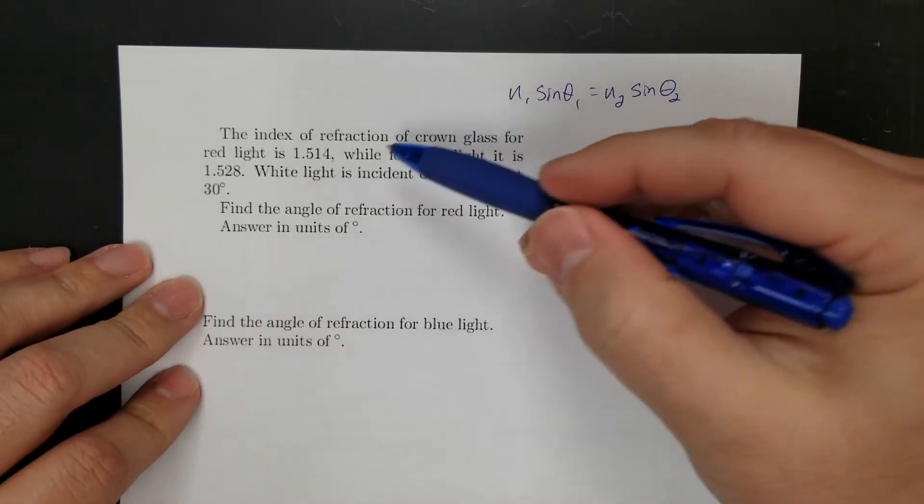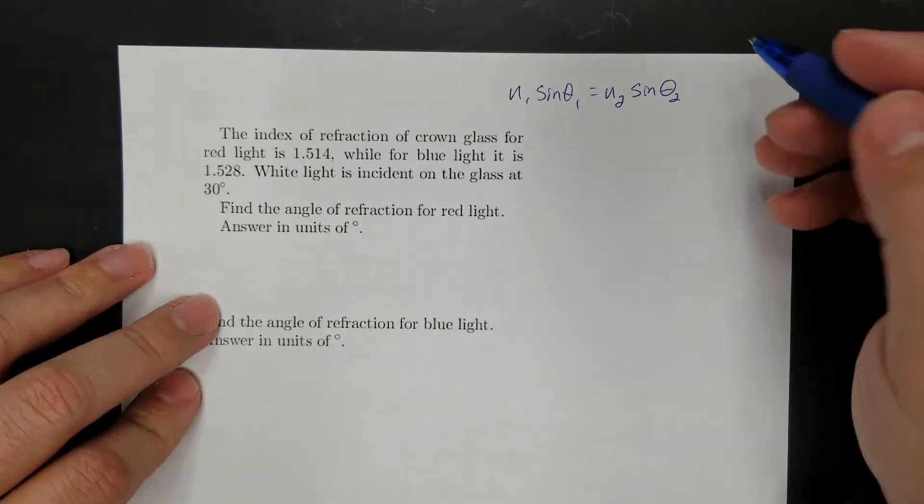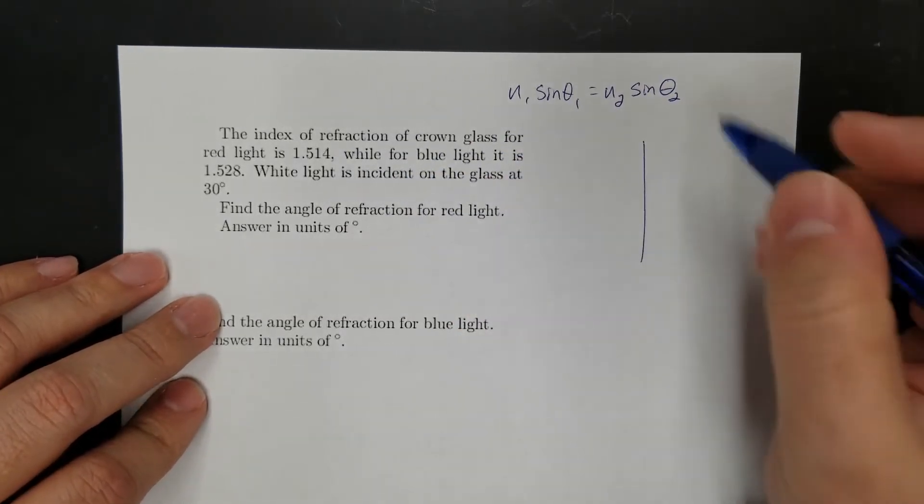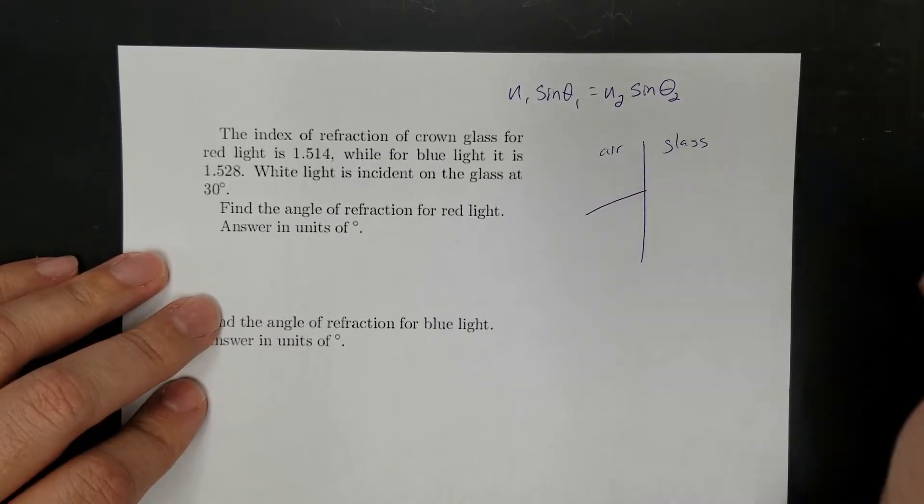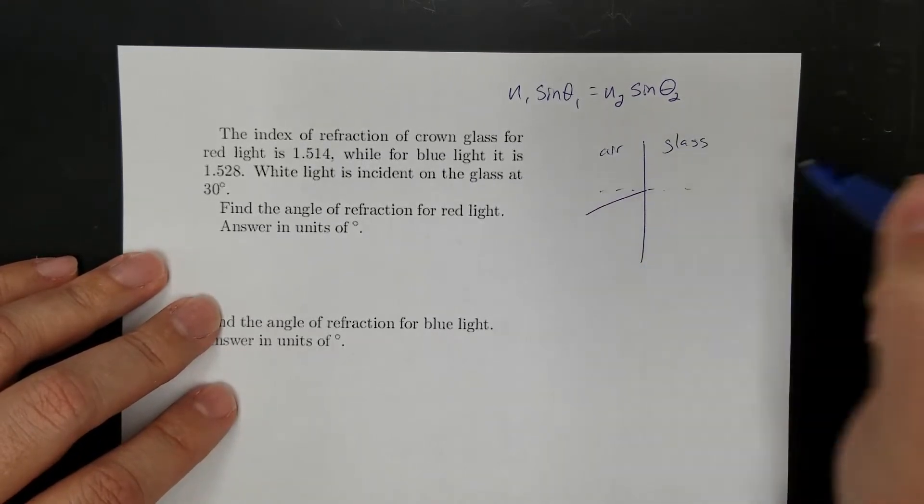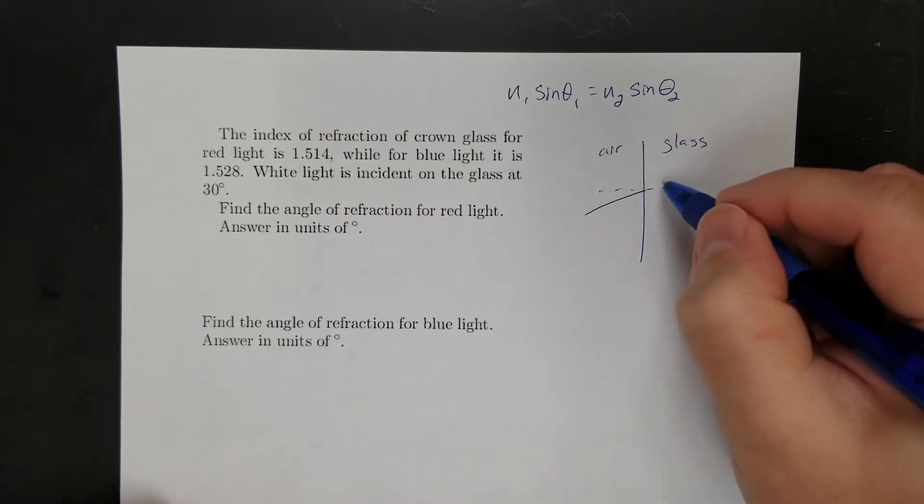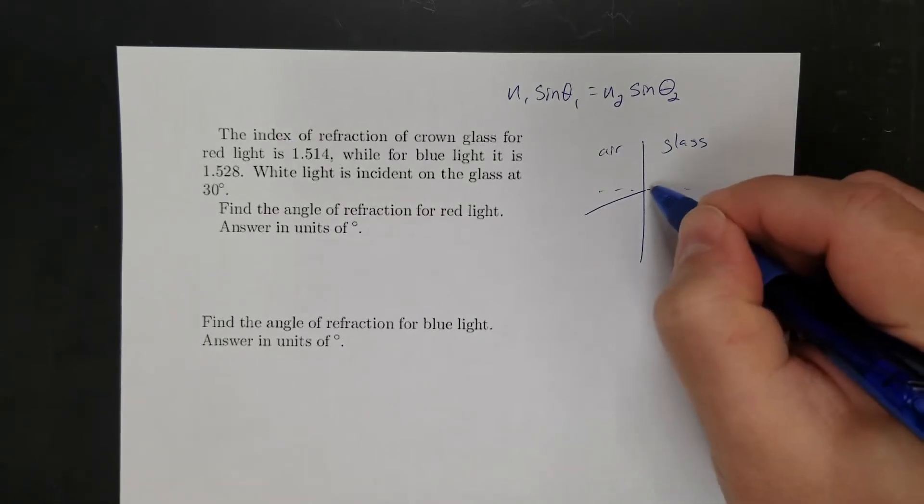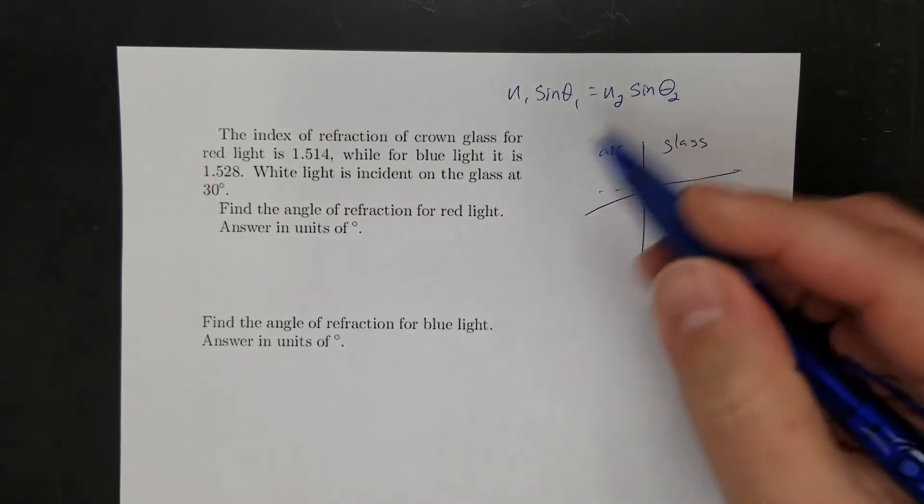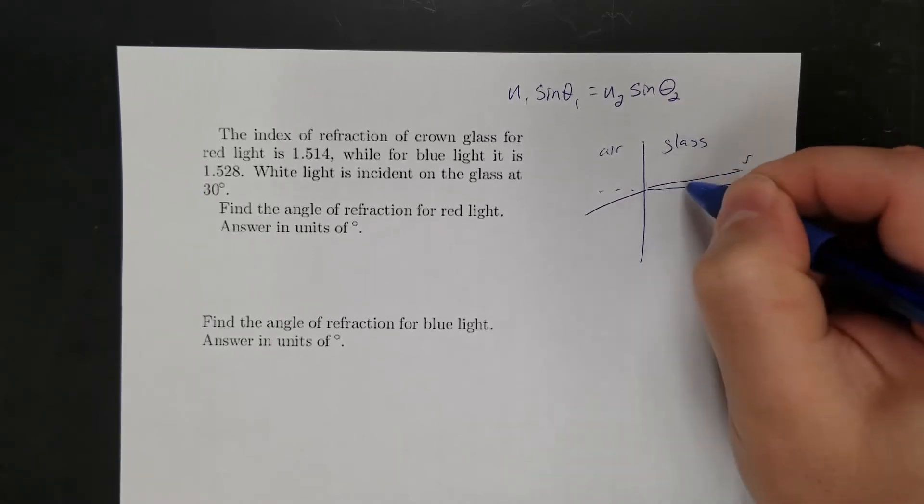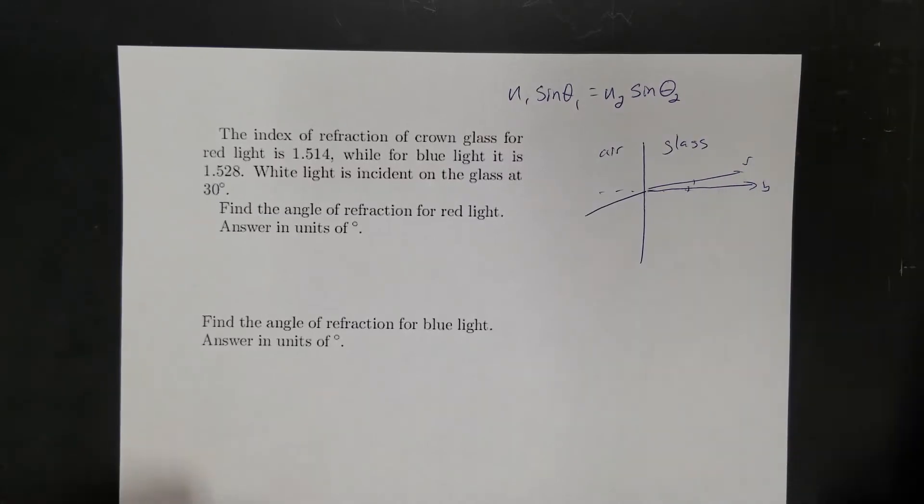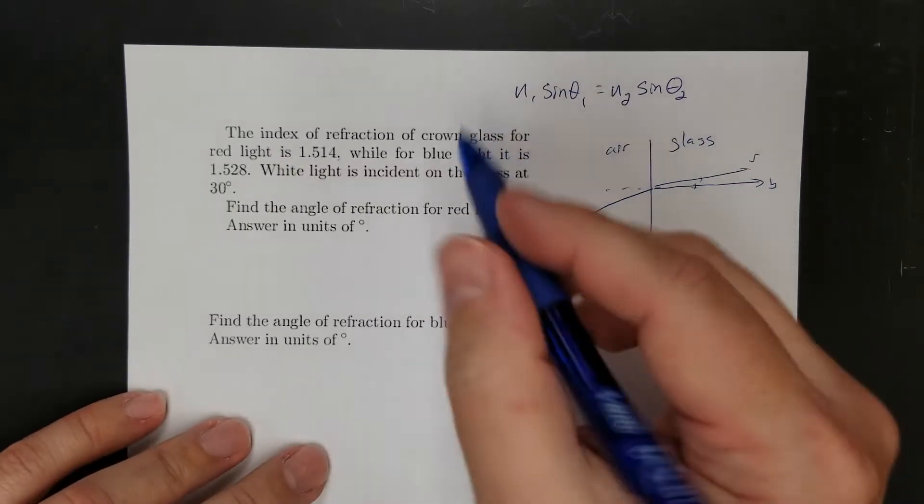Index of refraction of crown glass for red light is 1.514, but for blue light it's 1.528. So we have light, and it's going to go from air to glass, and here's my normal line. The red light is going to bend towards the normal, but the blue light is going to bend more because blue light's got a bigger index of refraction. And so we're trying to figure out what's that angle of refraction between red and blue.